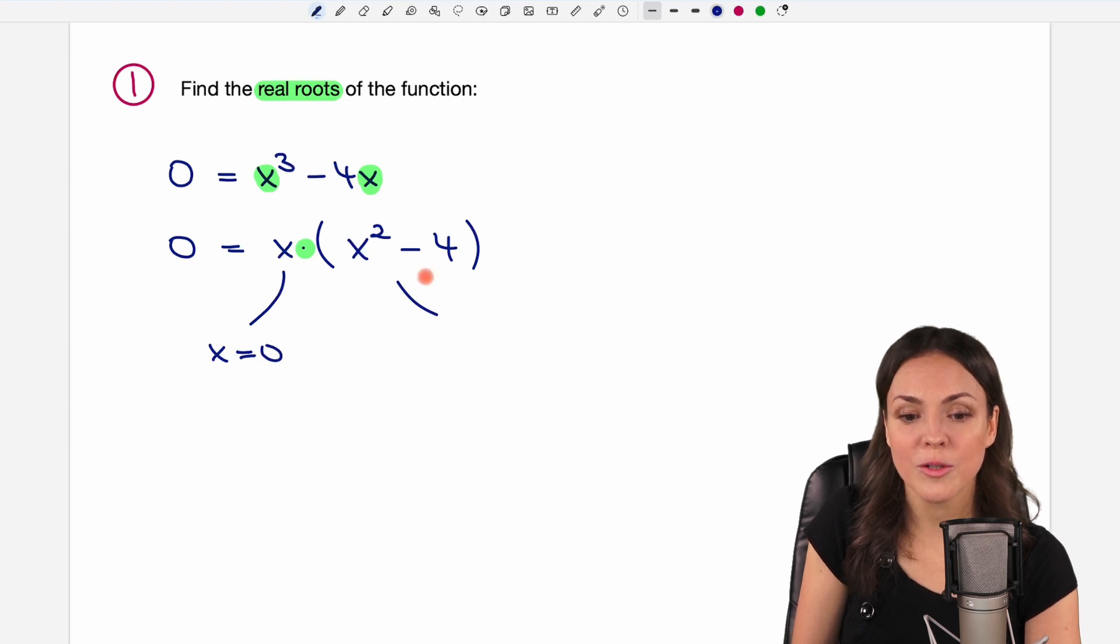Or the second part of our product equals zero. So everything that is in those parentheses equals zero. That's a really good thing how to solve these equations. So every time you have something times something equals zero, you can split your product into two parts, into easier parts.